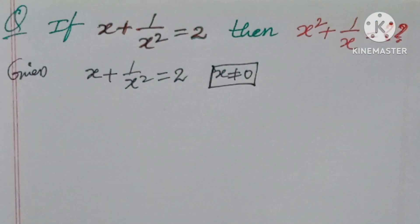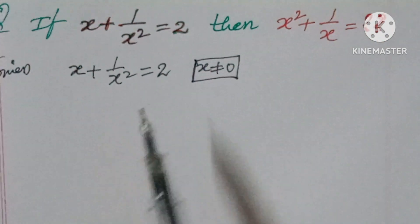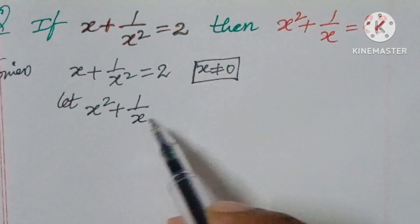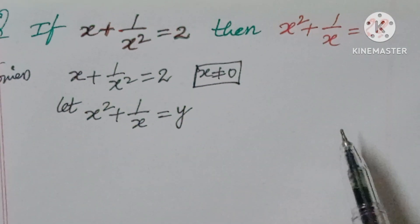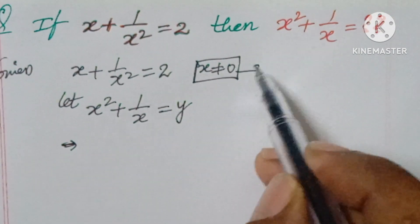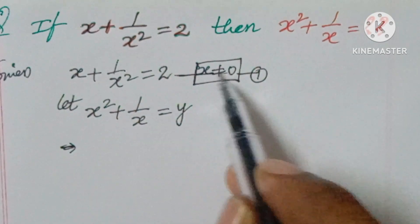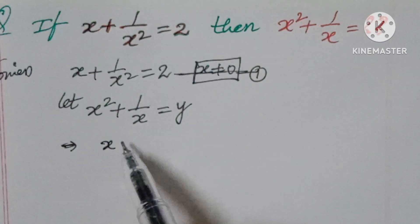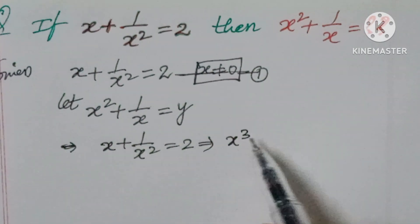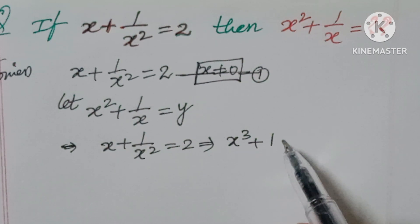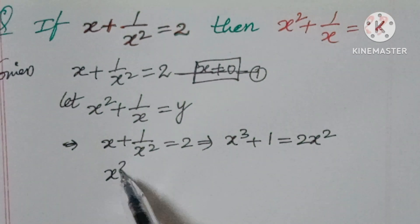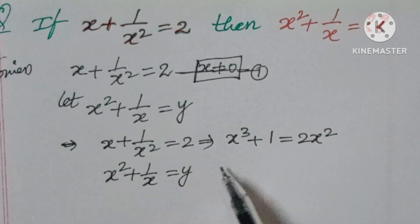Let us take x squared plus 1 by x equal to y — that is the value we have to find. Now, from the first condition: x plus 1 by x squared equals 2. Taking LCM, that implies x cubed plus 1 is equal to 2x squared.